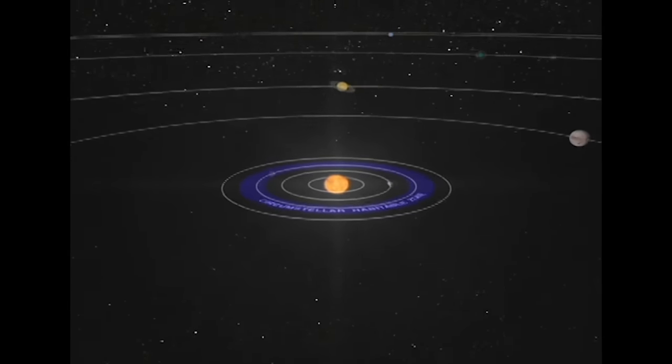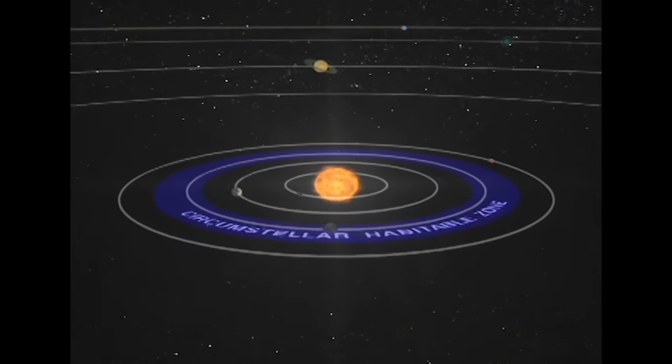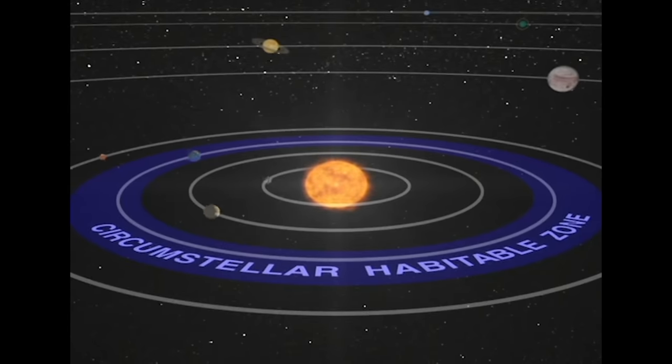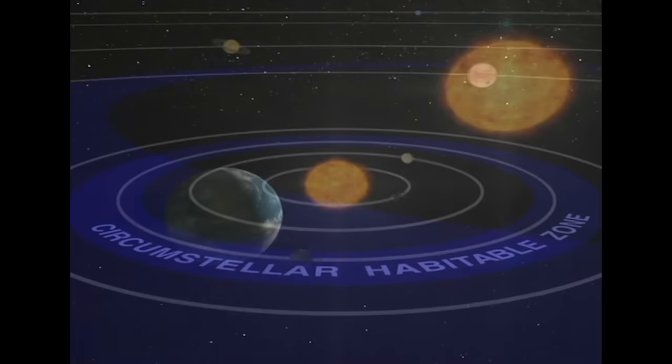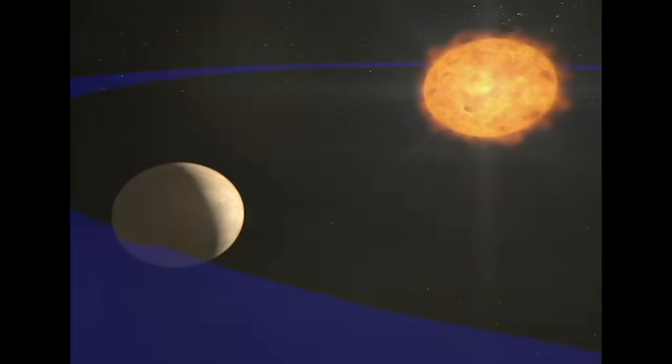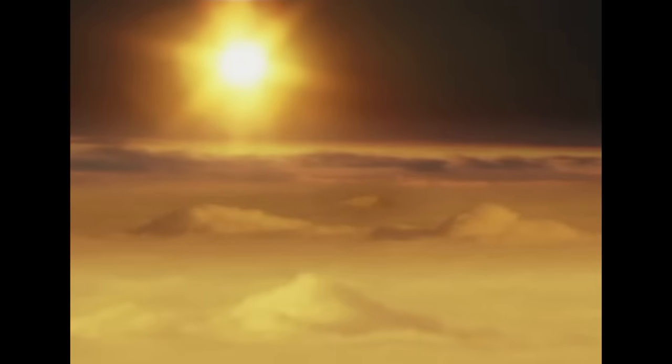beginning well outside the orbit of Venus and ending short of the orbit of Mars. If the Earth were just 5% closer to the sun, it would be subject to the same fate as Venus, a runaway greenhouse effect with temperatures rising to nearly 900 degrees Fahrenheit.